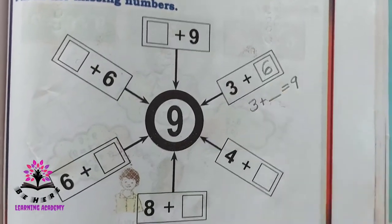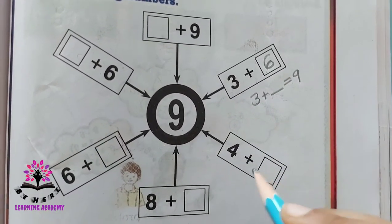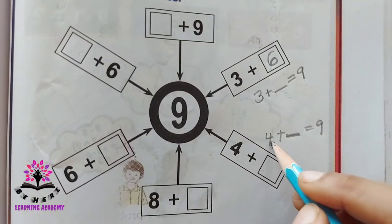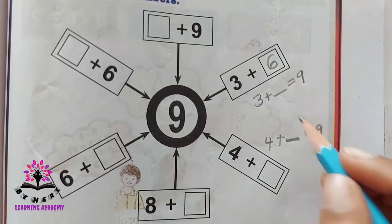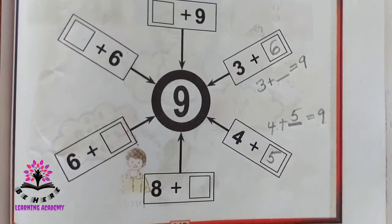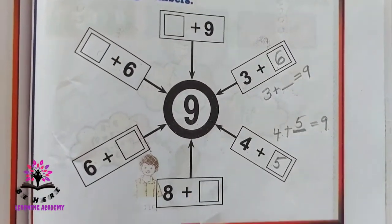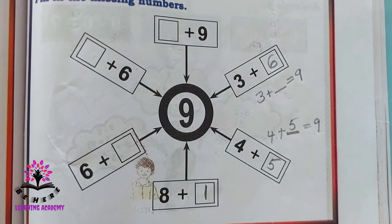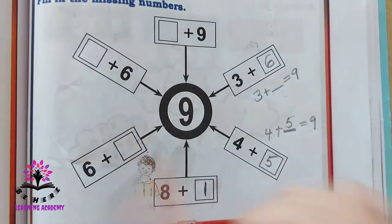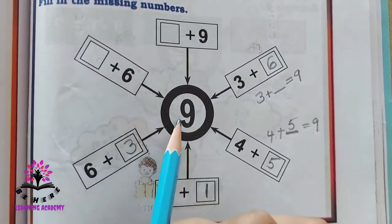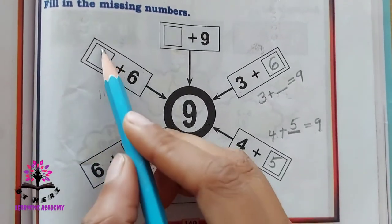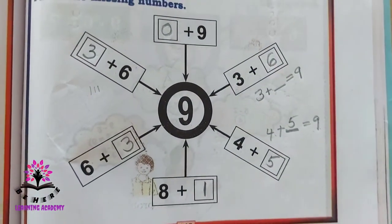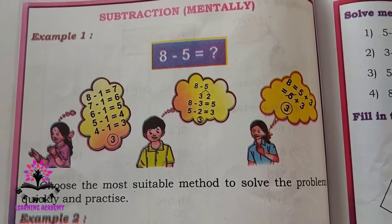Four plus dash equals nine. To find the answer, subtract four from nine — nine minus four is five. So the answer is five. Eight plus how much is nine? Eight plus one is nine. Six plus how much is nine? Six, seven, eight, nine — that is three. Dash plus six is nine: after six, seven, eight, nine — so it is three. Zero plus nine will be nine, so the answer is zero.